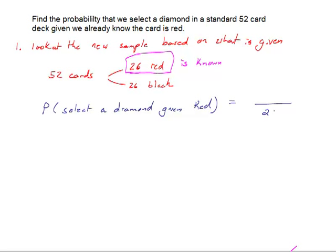And the number of ways that I can select a diamond is 13 out of those 26. So my probability of selecting a diamond given that it's red is found to be one half.